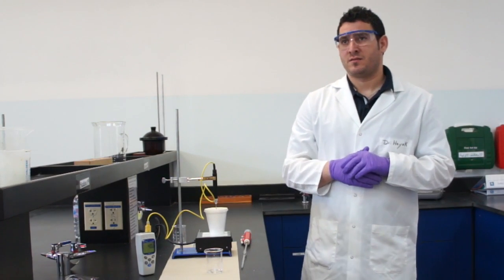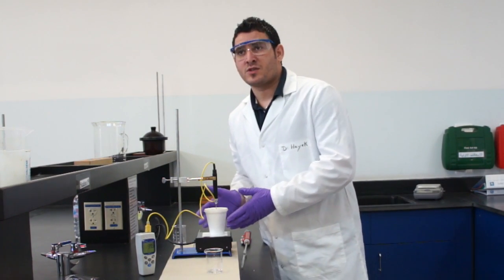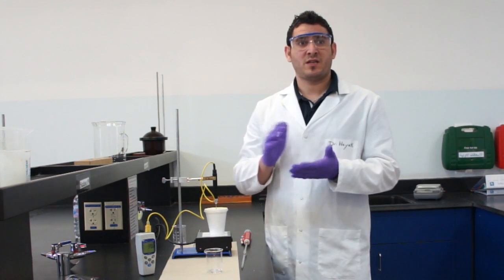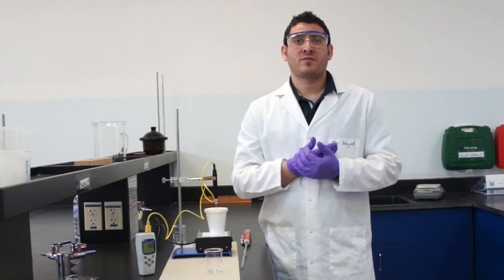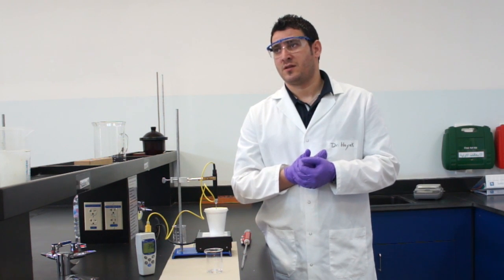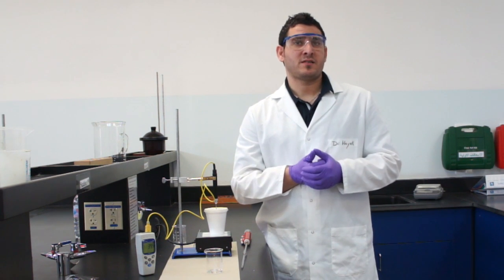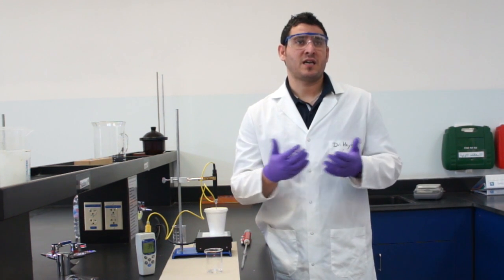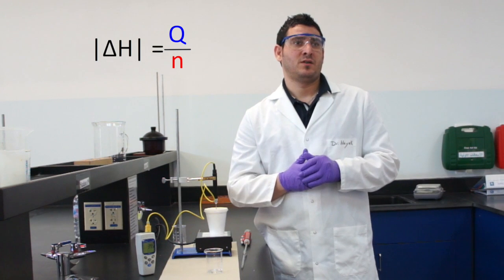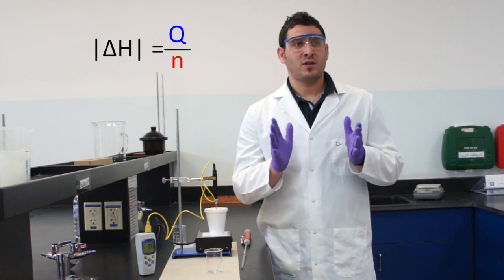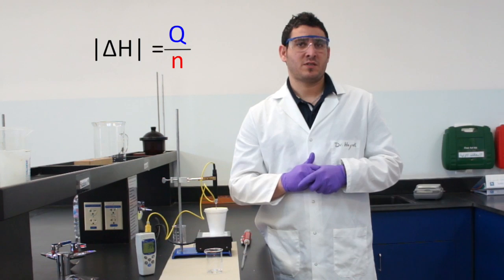calculate your delta T. The mass of the solution you know—you know the volume of the solution, 10 plus 10 is 20, and the density is 1, so the mass of the solution is 20 and the specific heat capacity for water is 4.18. Therefore you can calculate heat. To calculate enthalpy it's heat over the number of moles. Now I will explain this in the post-lab discussion.